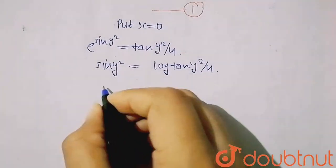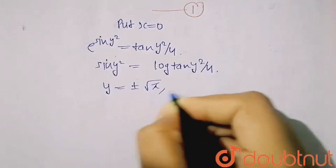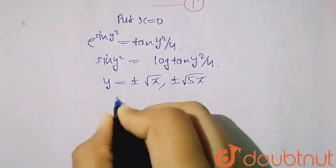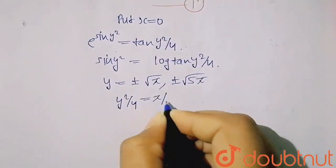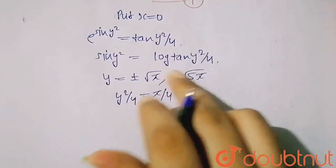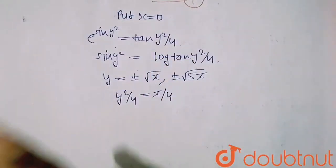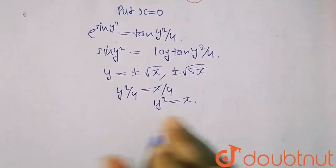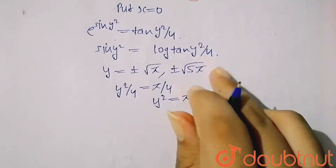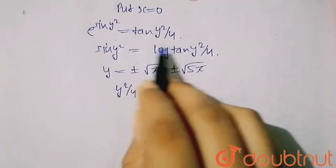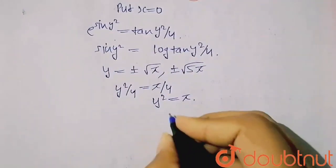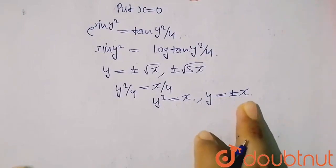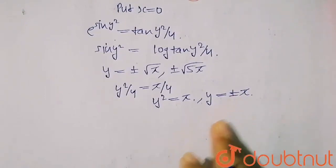From this, the value of y will be ±√π or ±√(5π), which satisfy this condition. Here, y²/4 should equal π/4, meaning y² = π, because at tan(π/4) you get 1, and log(1) = 0, which also satisfies sin(y²) = 0. So y² = π, meaning y = ±√π.